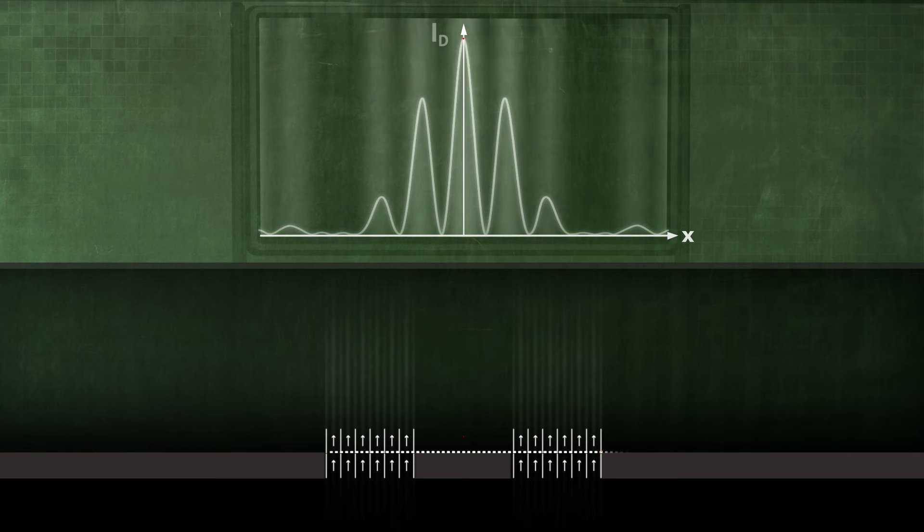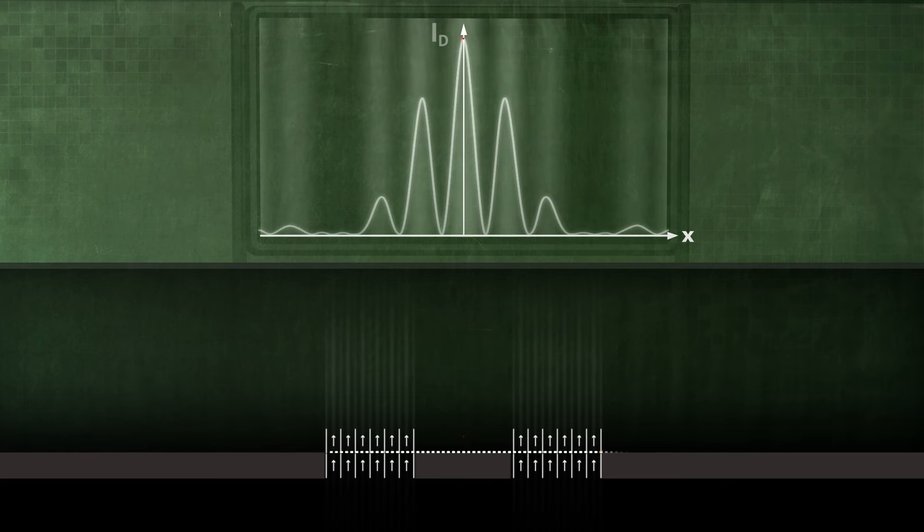Once the second slit has been opened, it can be seen that the path difference between the individual partial waves at the central maximum is zero again.